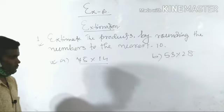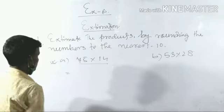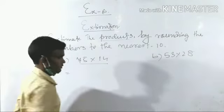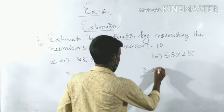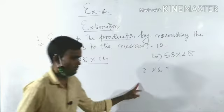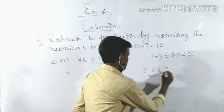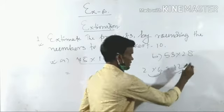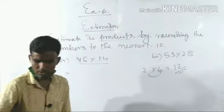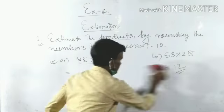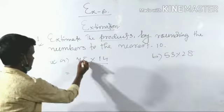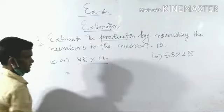Product means multiply. When we multiply two numbers, we get the product. For example, 2 × 6 is 12, so 12 is the product.